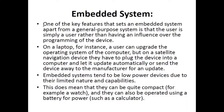One of the key features that sets an embedded system apart from a general purpose system is that the user is simply a user, rather than having influence over the programming of the device. When you use a laptop or computer, you can modify, install, and delete different software and applications, and make changes to Windows settings. Whereas when you use an embedded system, you cannot make those changes — you cannot alter the software of your microwave, digital watch, or smartwatch. You have to use the built-in functionality as it is.